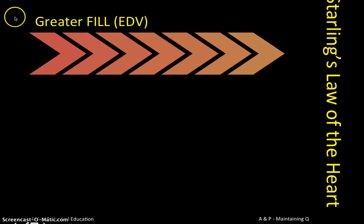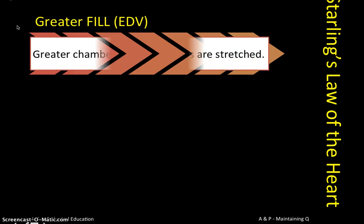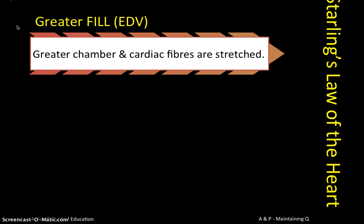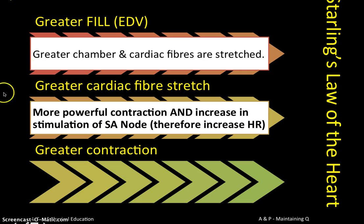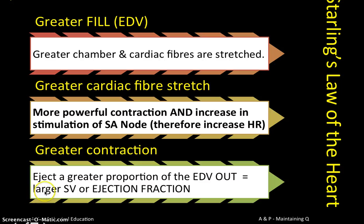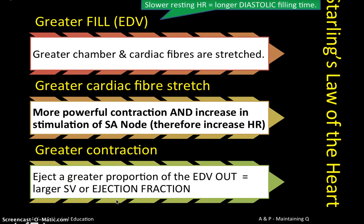Greater venous return means a higher EDV — more blood filling the chambers — which stretches the cardiac fibres of the myocardium. The greater the cardiac fibre stretch, the more powerfully the fibres contract, increasing stroke volume and ejection fraction. Incidentally, the stretch also stimulates the SA node to fire faster, raising heart rate. Additionally, a lower heart rate means a larger gap between contractions — more time for diastole and filling — which can produce a larger EDV and consequently a larger stroke volume. A lower resting or working heart rate is therefore beneficial.